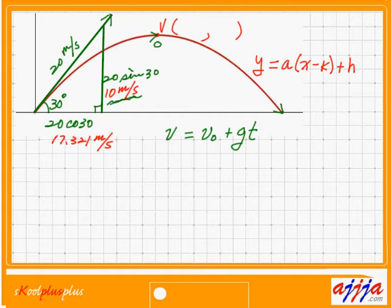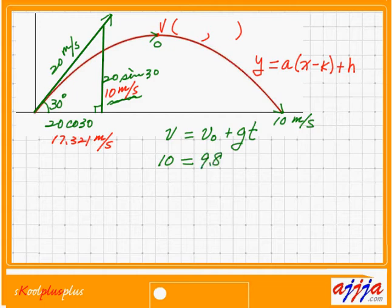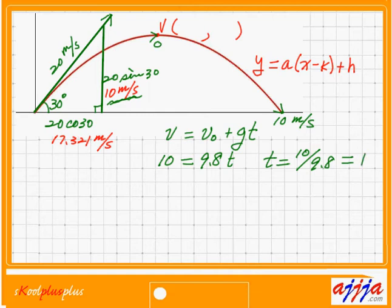I prefer to analyze the downward phase: final velocity is 10, initial velocity is 0, and acceleration is 9.8 (positive, since speed is increasing downward). So: 10 equals 9.8 times t, which means t equals 10 divided by 9.8 — since 9.8 is almost 10, t is almost 1 second. So each half of the flight is about 1 second.